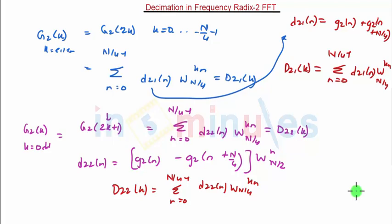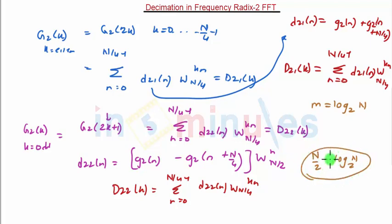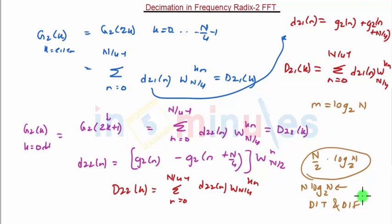The decimation of the frequency domain sequence can be continued until the resulting sequences are reduced to two-point sequences. The entire process involves M stages of computation, where M equals log₂(N). The computation of an N-point DFT using the Decimation-In-Frequency (DIF) FFT algorithm requires N/2 times log₂(N) complex multiplications and N times log₂(N) complex additions. The total number of computations remains the same in both DIT and DIF, so DIF is equally an efficient method to compute the DFT.